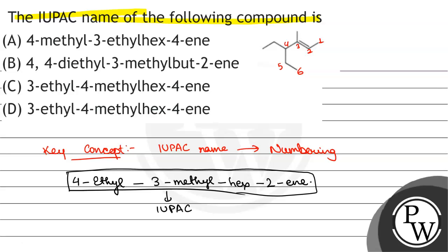The correct option will be 4-ethyl-3-ethyl. If we give priority then also it will be 4-ethyl-3-ethyl-hex-2-ene. So this will be the IUPAC name. Hope you understood it well. Best of luck.